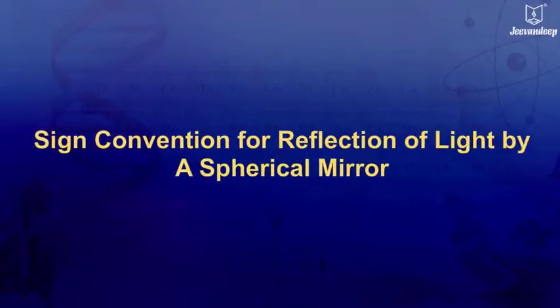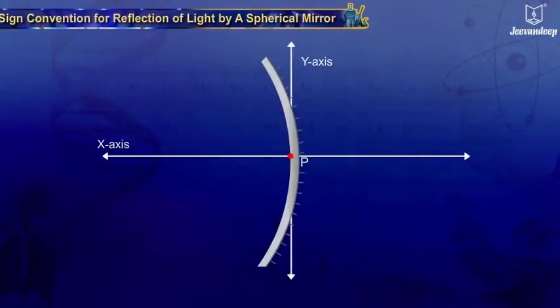Sign convention for reflection of light by a spherical mirror. According to the new Cartesian sign convention, the pole P of a spherical mirror is taken as the origin.